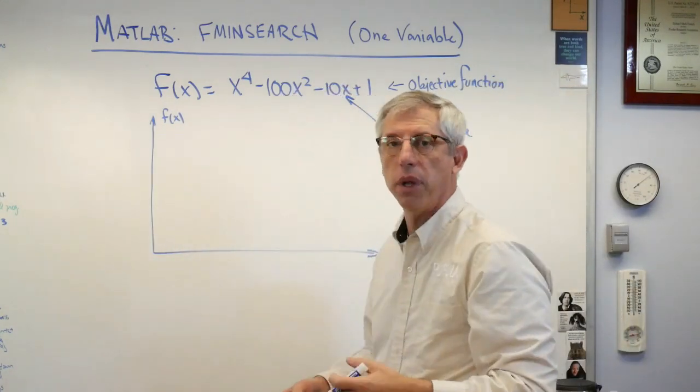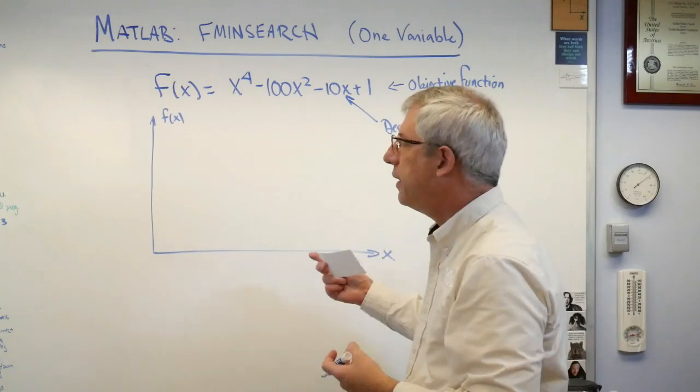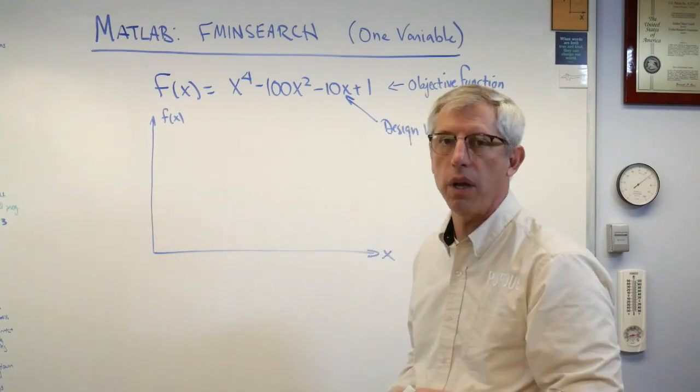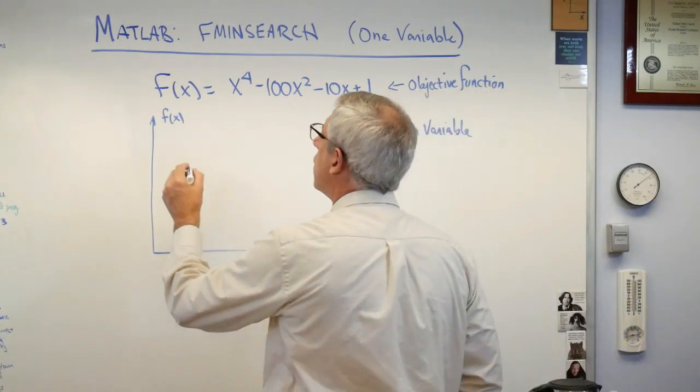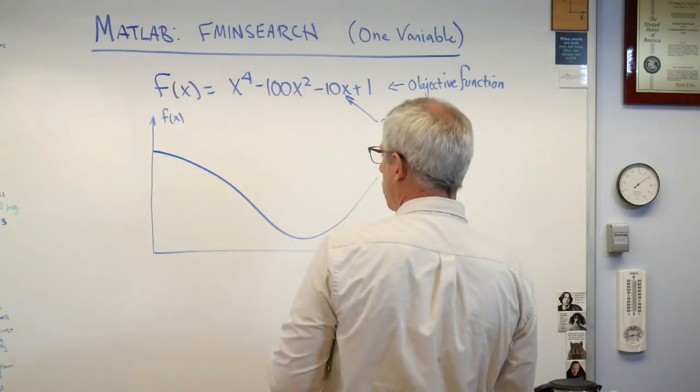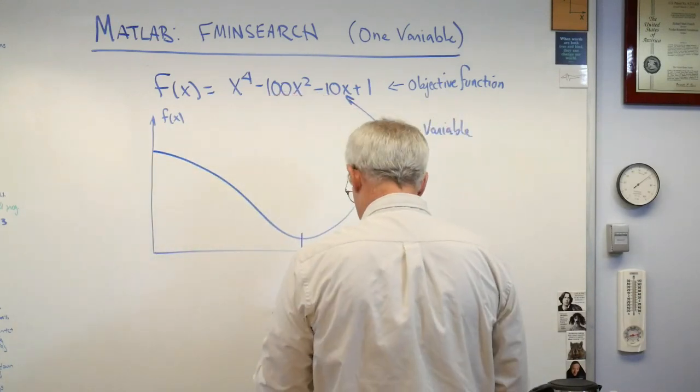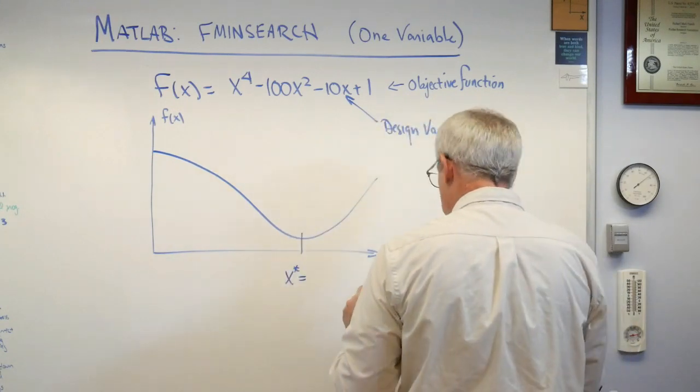And this plot, where you plot the objective function against your design variables is called design space. In this case, design space only has two dimensions because you've only got one design variable, but it can have any number of dimensions. It's nice to do these one variable problems because they're easy to draw a picture of. There's pretty much what the objective function looks like. And x star, that star means that's the minimum. Now you see that notation a lot.